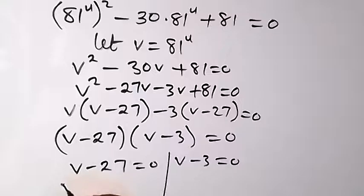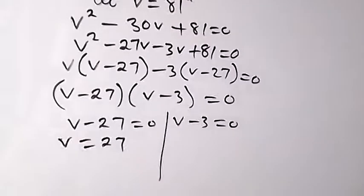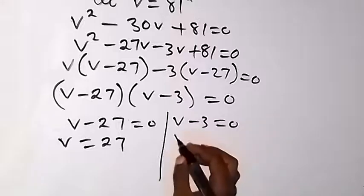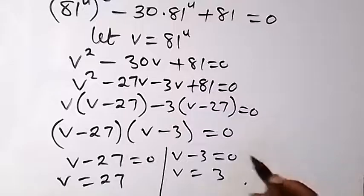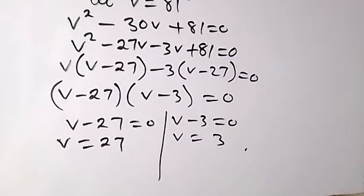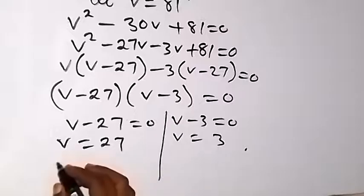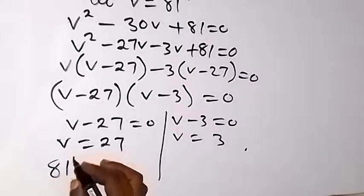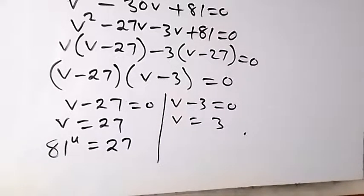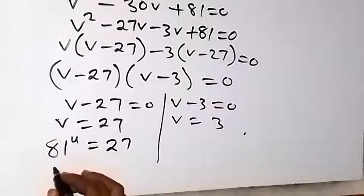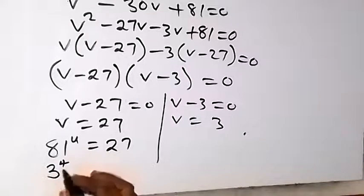Since (v minus 27) is common, we factor it out: (v minus 27)(v minus 3) equals 0. So two cases: v minus 27 equals 0, giving v equals 27, or v minus 3 equals 0, giving v equals 3. Recalling that v equals 81^u, we now substitute back.